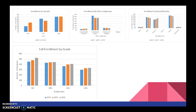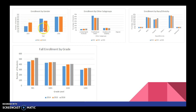Looking at the enrollment tables, for enrollment by gender you can see that in 2014 female enrollment was higher than male, but in 2015 it switched and male was higher. Now in 2016 going into 2017 the data indicates they are equivalent. For the other subgroups, free and reduced lunch is much higher than any other subgroup. The next highest by enrollment is students with disabilities, followed by limited English proficiency students. There was no migrant data, so we couldn't track those students.